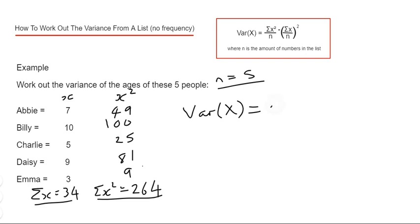So Σx² is 264, and we divide that by 5 minus 34 over 5 again, and that is squared. So if you've got a scientific calculator, you should be able to type that in as it appears. And our answer for the variance is 6.56.